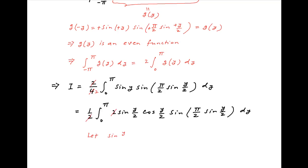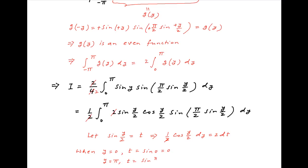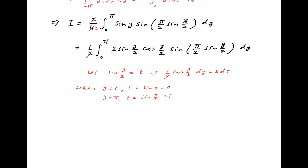Let sin(y/2) equal t. Taking the derivative of both sides, half of cos(y/2) dy equals dt, so cos(y/2) dy equals 2 dt. When y equals 0 (lower limit), t equals sin(0) equals 0; when y equals π (upper limit), t equals sin(π/2) equals 1. Therefore I equals the integral with t going from 0 to 1, where sin(y/2) is replaced with t, times sin(πt/2), and cos(y/2) dy is replaced with 2 dt.